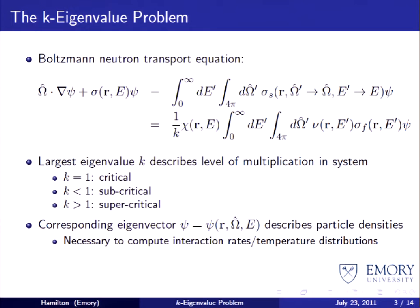Our governing equation is the Boltzmann neutron transport equation. What we're solving for is the angular flux psi, which is a function of spatial location, direction of particle travel, and energy. So we have a very large phase space to deal with. In this equation, we have several quantities — sigma, chi, nu, and sigma_f — which are experimentally determined values. We're interested in finding the eigenvalue k, which is introduced to enforce a balance in the equation, and we want the largest value of k and the corresponding eigenvector psi such that the equation holds.